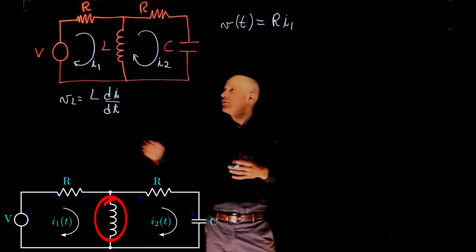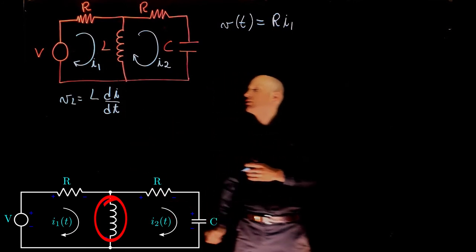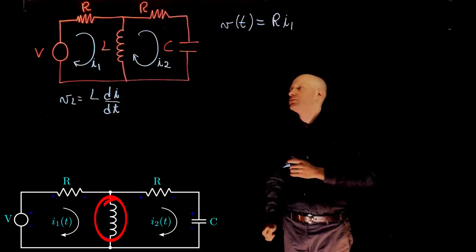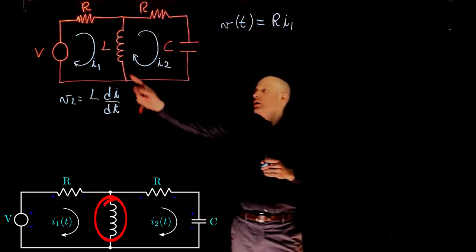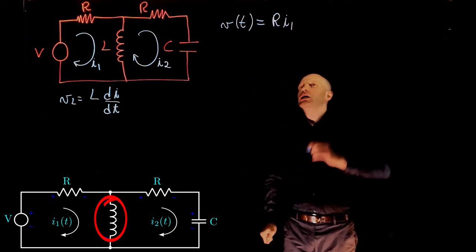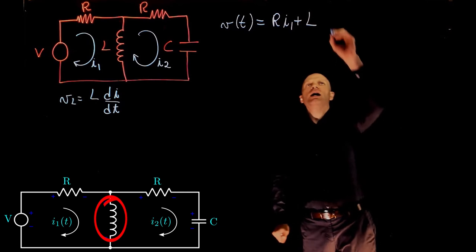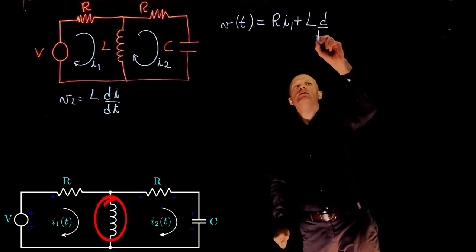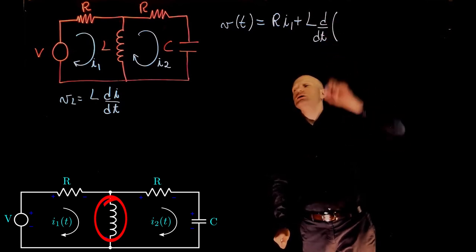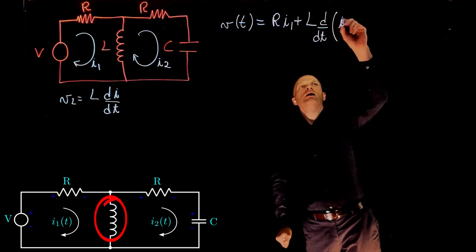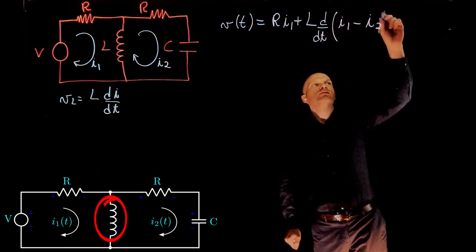Again, because our positive reference is the current we are currently following, that is I1. So the voltage drop across the inductor is L times the derivative of the current through the inductor, that is I1 minus I2.